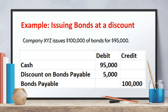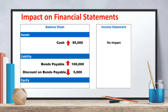The discount represents additional interest expense over the life of the bond. Cash increases but by less than the face value, and the discount is recorded as a contra liability. Balance sheet impact: cash increases by $95,000, bonds payable increases by $100,000, discount on bonds payable (a contra liability) decreases liabilities by $5,000. On the income statement, there is no immediate effect, but interest expense will be higher over time due to the discount.